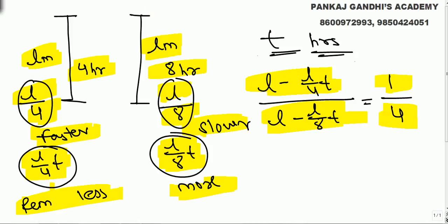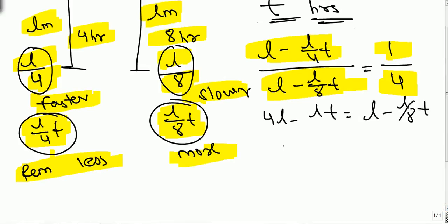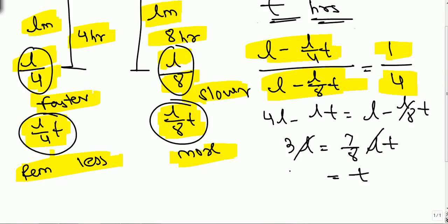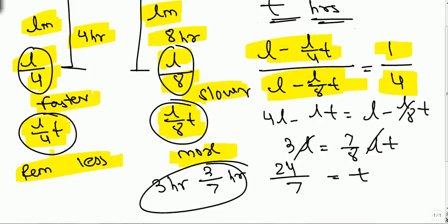Setting up the equation: l minus (l by four)t equals one-fourth of [l minus (l by eight)t], which gives 4l minus lt equals l minus (l by 8)t, so 3l equals 7 by 8 times lt. Cancelling l, t equals 24 by 7, or 3 hours and 3 by 7 hours.